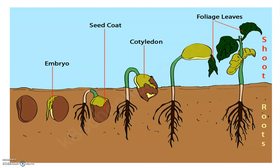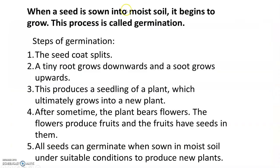Next is the process of germination. First, we take a seed and put it inside moist soil. After that, the seed grows slowly, and finally a new baby plant grows properly. When a seed is sown into moist soil — moist soil means wet soil — it begins to grow. This process is called germination.